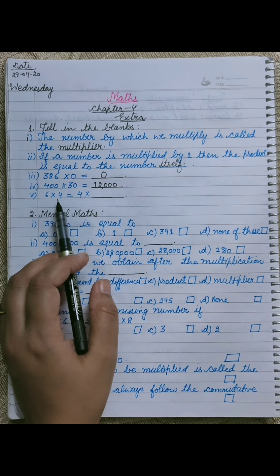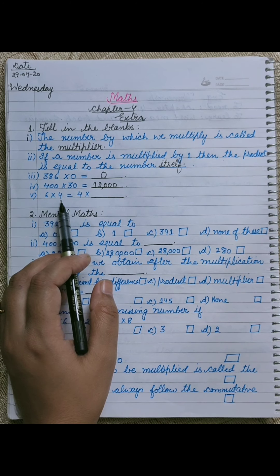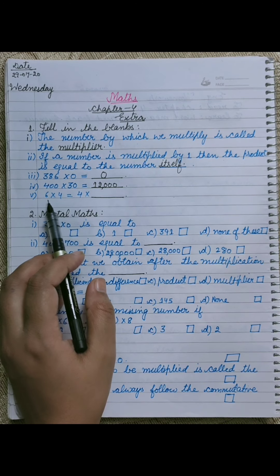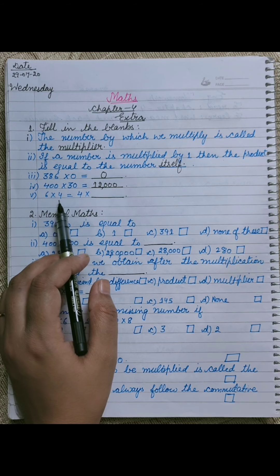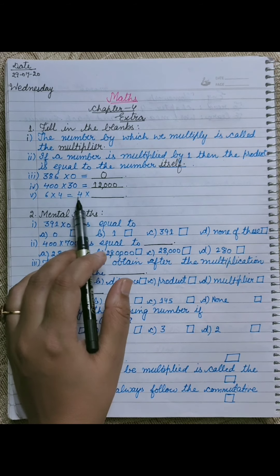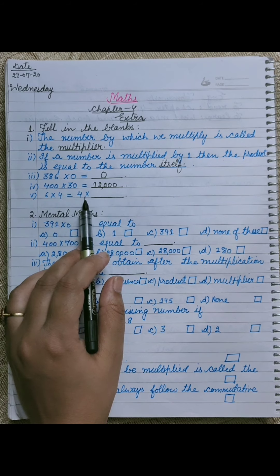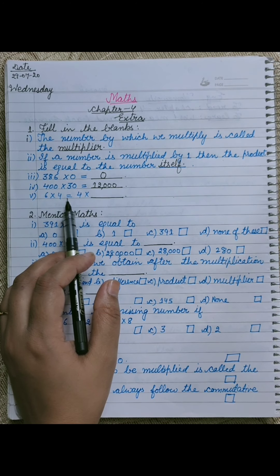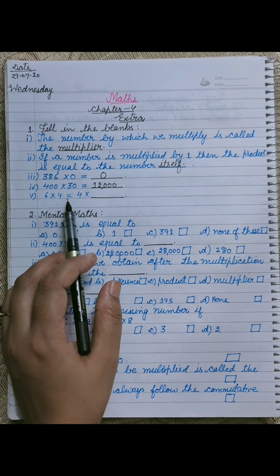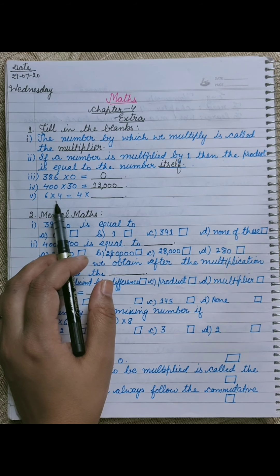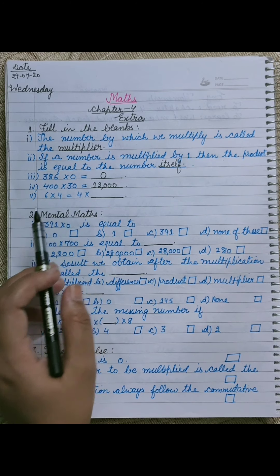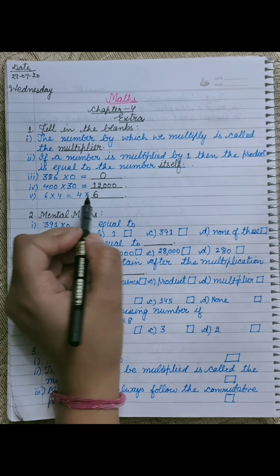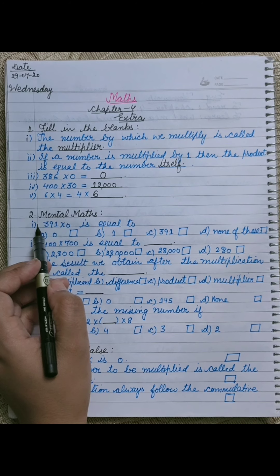Fifth is 6 into 4 is equal to 4 into dash. This is our first property — commutative property. Commutative property kya thi: a into b is equal to b into a. Agar hum 6 ko 4 se multiply karte hain to 24 aayega, aur 4 into 6 bhi 24 aayega. When we multiply and change the order, the answer remains the same. So 6 into 4 is equal to 4 into 6.